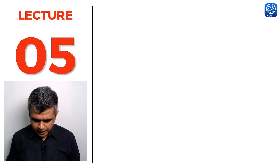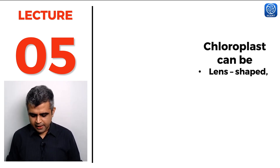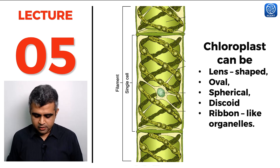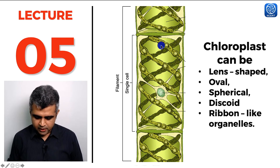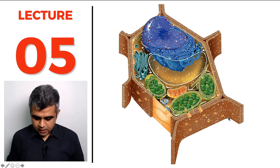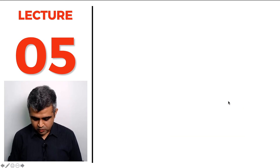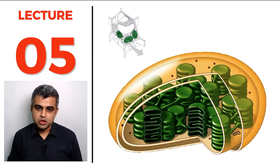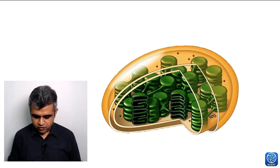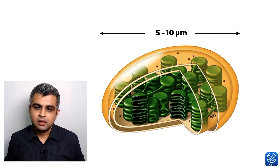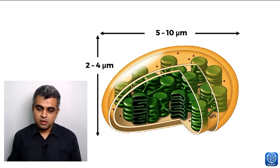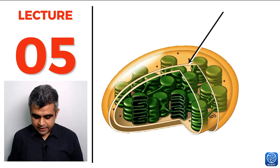Chloroplasts can be lens-shaped, oval, spherical, discoid, or ribbon-like organelles. Spirogyra has a single spirally coiled ribbon-like chloroplast. The chloroplast in a plant cell is about 5 to 10 microns in length and 2 to 4 microns in breadth. It has an outer membrane and an inner membrane, with the inter-membrane space in between.